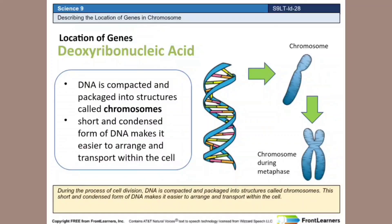During the process of cell division, DNA is compacted and packaged into structures called chromosomes. This short and condensed form of DNA makes it easier to arrange and transport within the cell.